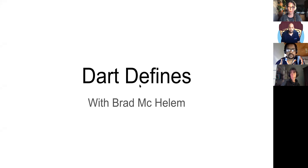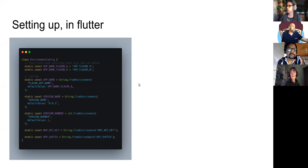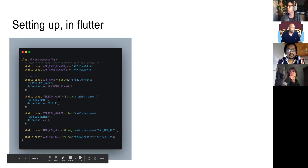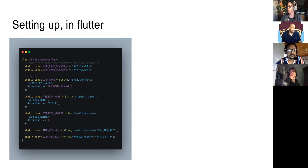Starting with Dart Defines — setting up in Flutter. The first thing you want to do is create a config file. Anything that's public I put above here — things I don't mind anybody seeing, such as the app name or anything comfortable being visible in the app. Below those are my config variables: app name, version name, version number, API key, and API suffix — things I would like to keep private.